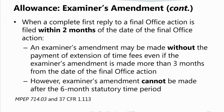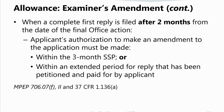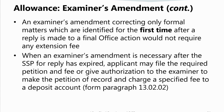An examiner's amendment is proper even if issued more than three months from the date of the final office action, if a complete first reply is filed within two months of the date of the final office action. However, an examiner's amendment cannot be made after the six-month statutory time period. Where a complete first reply has not been filed within two months, applicant's authorization to make an amendment must be made either within the three-month shortened statutory period, or within an extended period petitioned and paid for by applicant. An examiner's amendment correcting only formal matters identified for the first time after a reply would not require any extension fee.